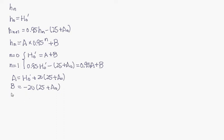So we have known that Hn is A times 0.95^n plus B and A and B are here. Of course we can use induction to prove Hn is correct.